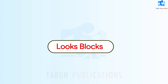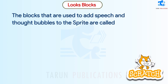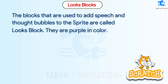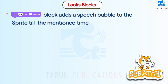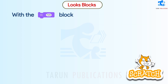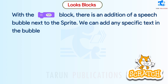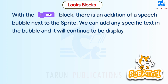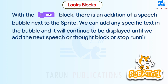Looks blocks are used to add speech and thought bubbles to the sprite. They are purple in color. One block adds a speech bubble to the sprite for a mentioned time in seconds. Another block adds a speech bubble next to the sprite; we can add any specific text in the bubble and it will continue to be displayed until we add the next speech or thought block, or stop running the program.